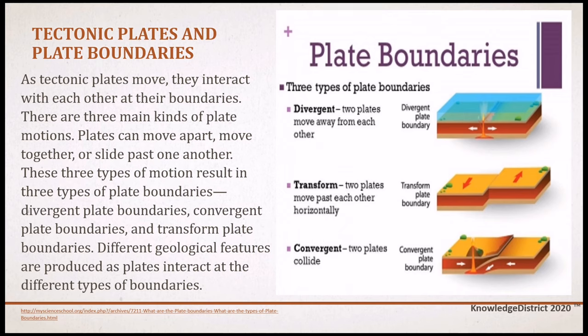The three types of plate boundaries are: divergent plate boundaries, convergent plate boundaries, and transform plate boundaries. Different geological features are produced as plates interact at these different boundary types. The movements of these plate boundaries are described in the picture.